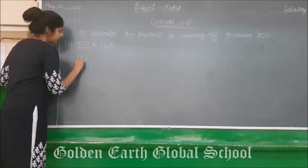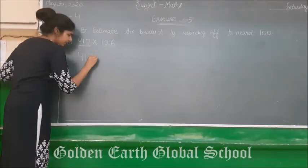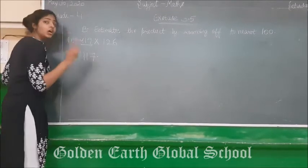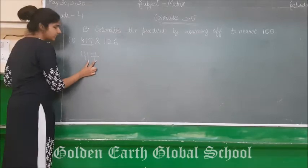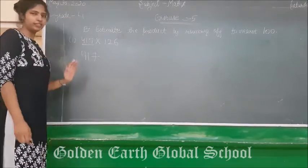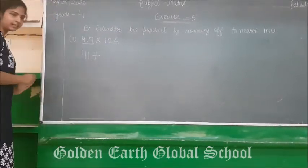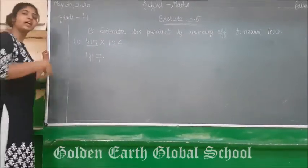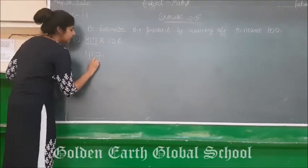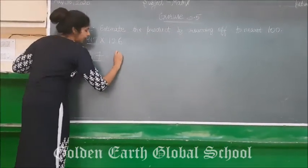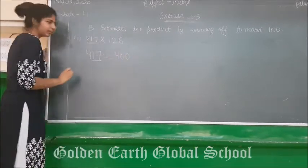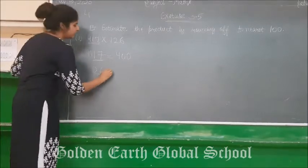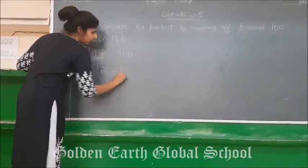Our first number is 470. To find its round off to nearest 100, check the last two digits. If the last two digits are smaller than 50, we shift to the backward 100. If greater than 50, we shift to the next 100. Here, 70 is greater than 50, so... actually the last two digits of 470 are 70 — wait, 70 is greater than 50, so the nearest 100 is 500. For 126, the last two digits are 26, which is less than 50, so its nearest 100 is 100.